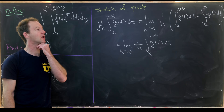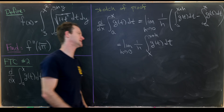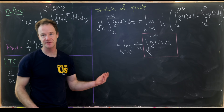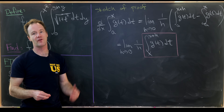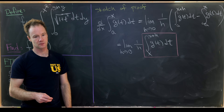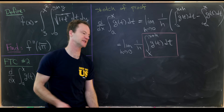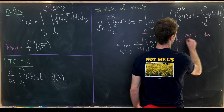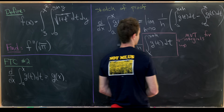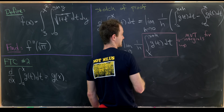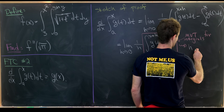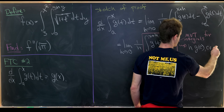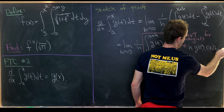From here we use the Mean Value Theorem for integrals. You might ask whether we should use it without proving it — but for our purposes it's okay. The MVT for integrals says that this integral is equal to h times g(c), where c is some number between x and x plus h. So the h cancels, leaving the limit as h goes to zero of g(c).